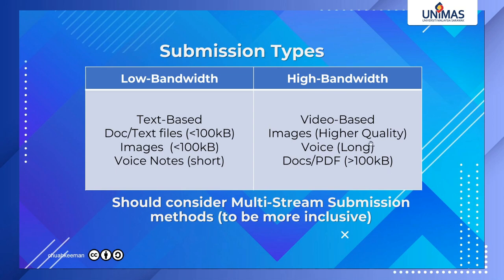If the majority of students have good connections, you might give them video-based materials, higher-quality images, longer voice notes, or PDFs. But if you have two extreme groups — one with very good internet and one with very low internet — I recommend multi-stream submission: create two groups, one for each type. Be aware there may be dissatisfaction if the high-bandwidth group has to do more, like video, while the other does text-based.